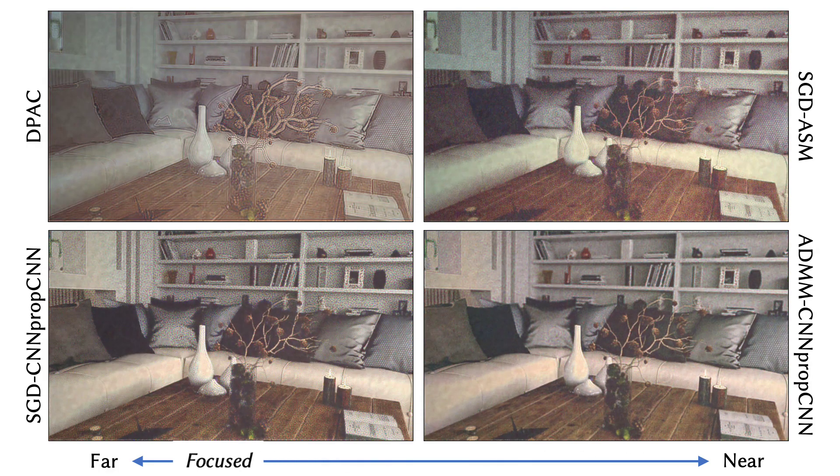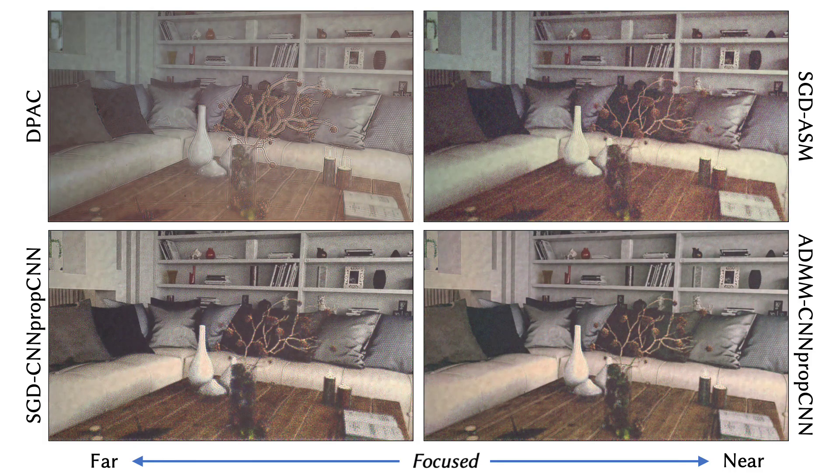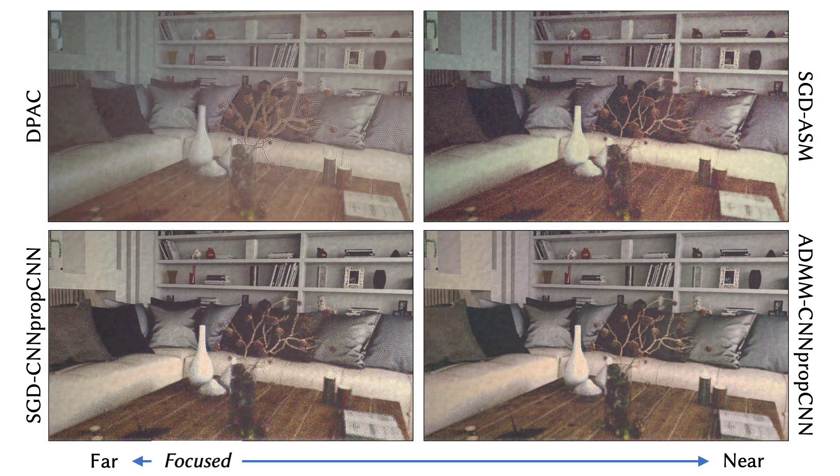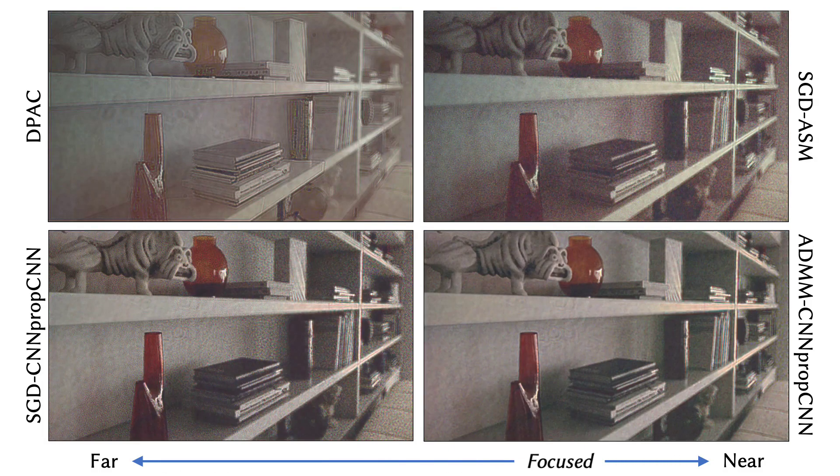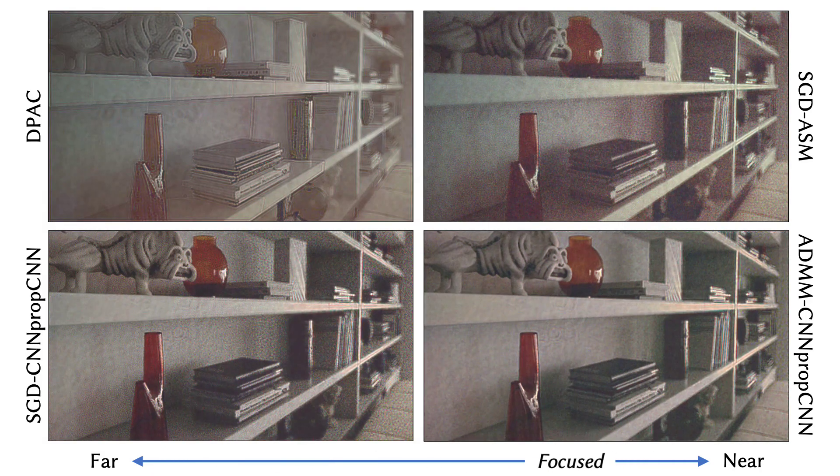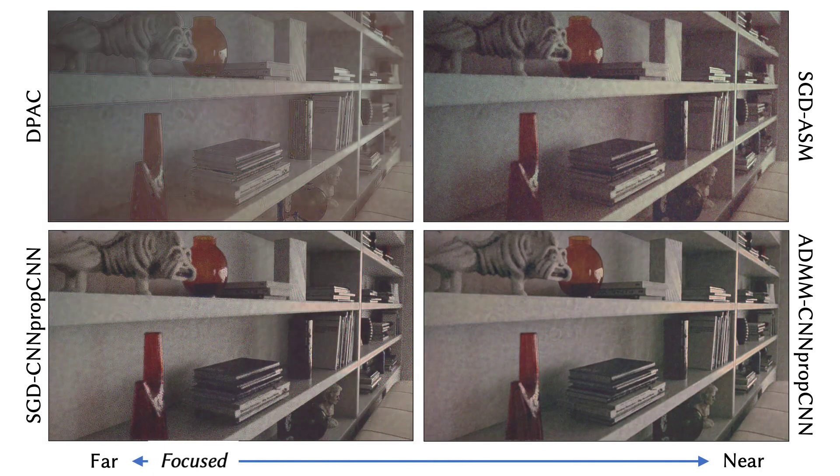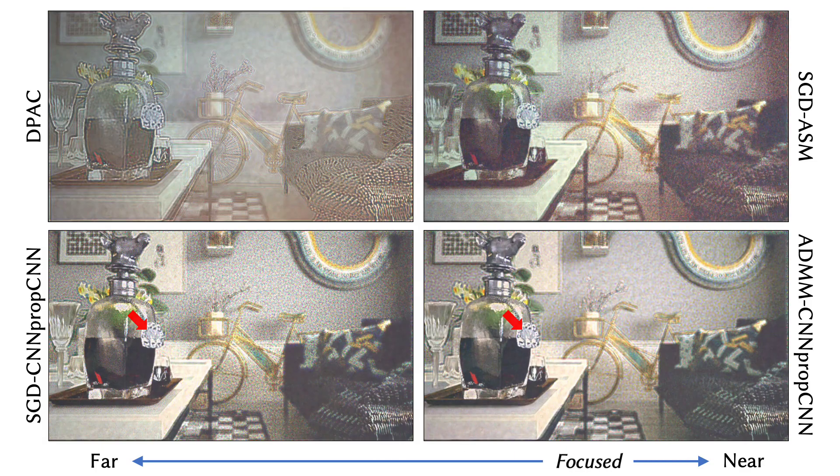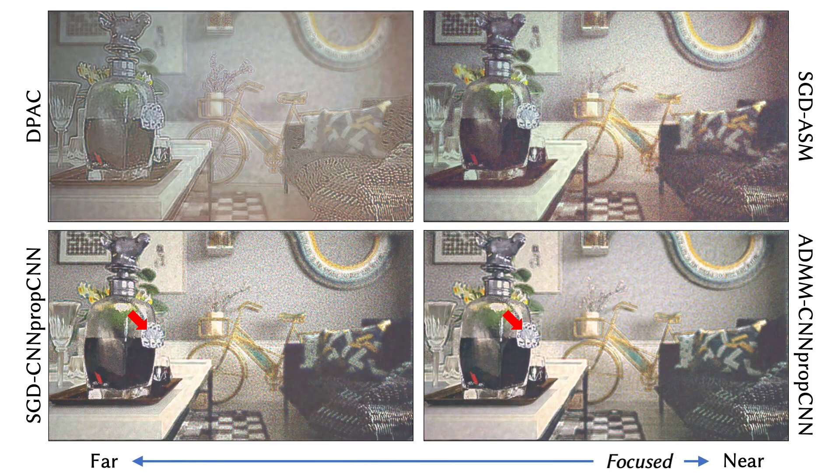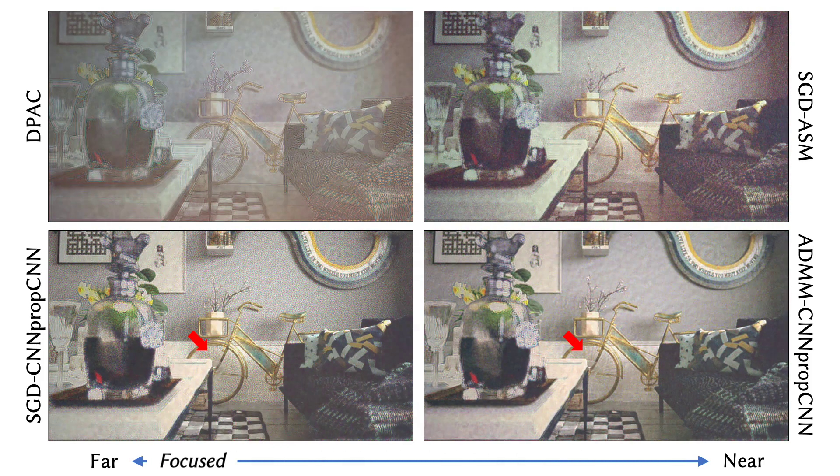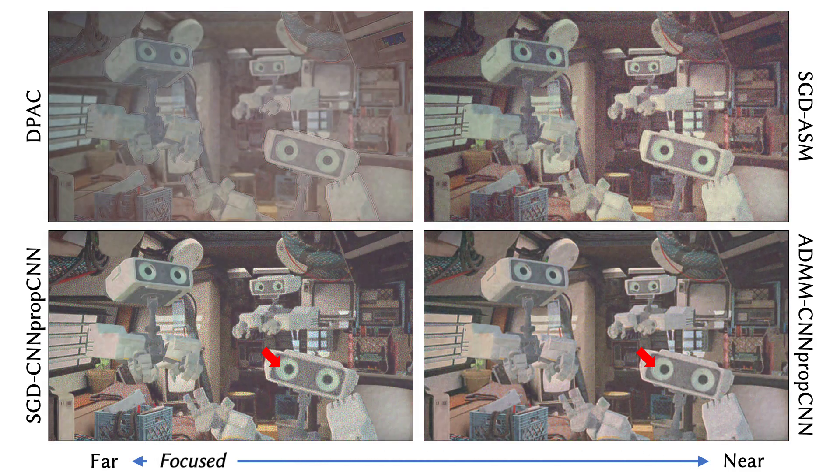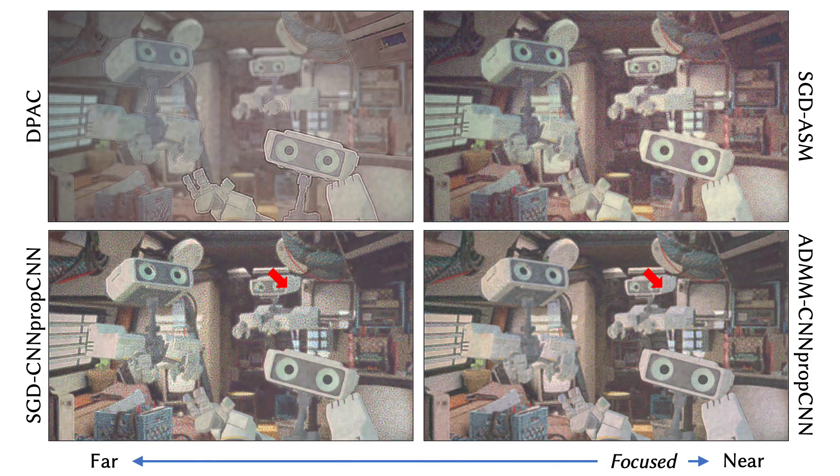We now show a set of captured focal stacks of 3D example scenes and compare several CGH algorithms. Our implementation of the double-phase amplitude coding approach usually suffers from low contrast. Using an SGD solver with the ASM model shows severe speckle artifacts. Our model used with SGD provides the best image quality for parts of the scene which are in focus. Our ADMM solver with additional phase regularization further improves the quality of these 3D results in out-of-focus regions.